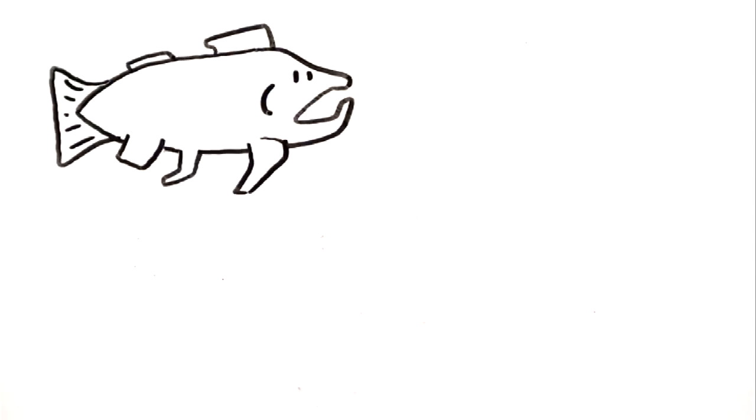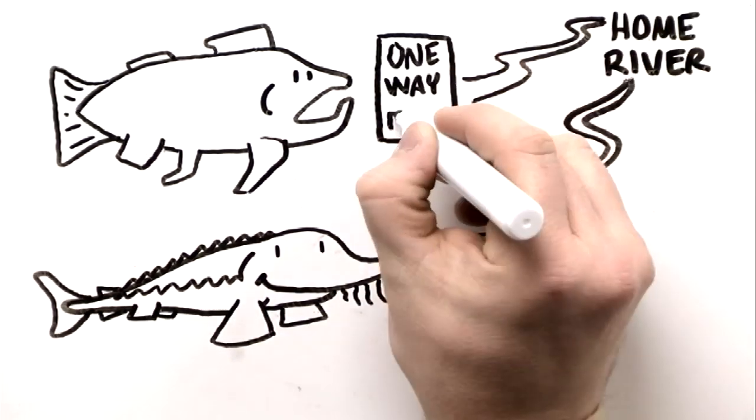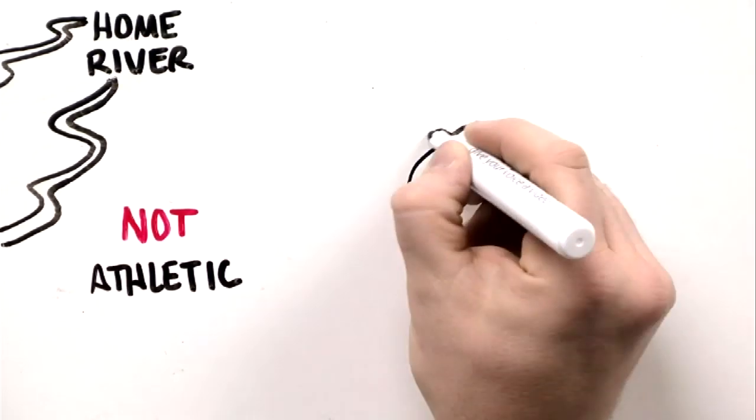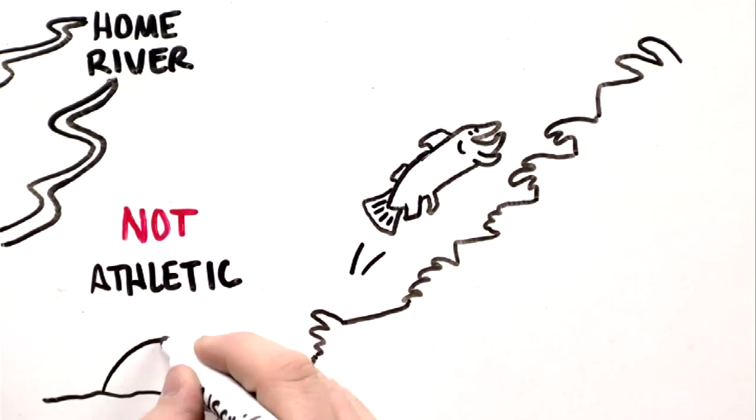Just like salmon, sturgeon have a home river they return to to spawn, but unlike salmon, they don't go there to die, and they are not athletic like salmon. Sturgeon can't jump on fish ladders.